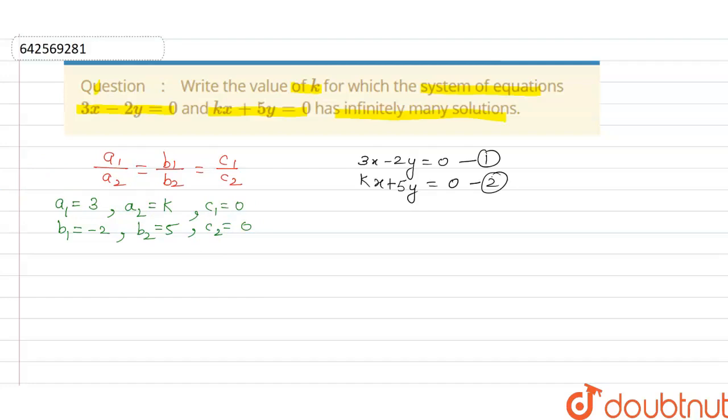So when we put these values, a1 is equal to 3, and a1 is the coefficient of x in equation 1, and a2 is the coefficient of x in equation 2. b1 is the coefficient of y in equation 1, and b2 is the coefficient of y in equation 2. c1 and c2 are the constants of equations 1 and 2.